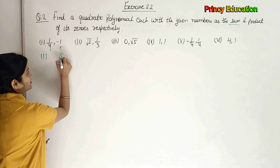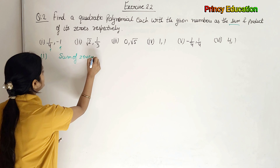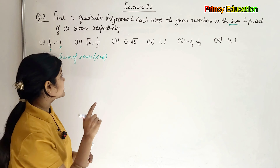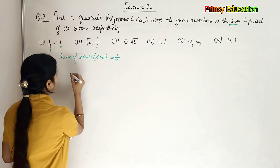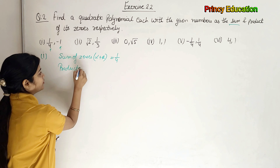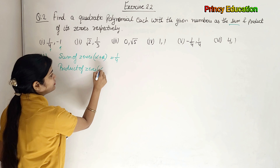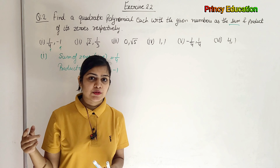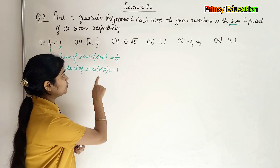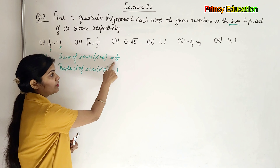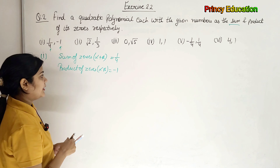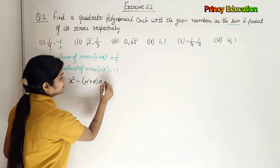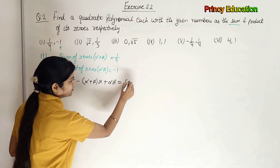First, what is given? Sum of zeroes — alpha plus beta — is equal to 1/4. Product of zeroes — alpha times beta — is equal to minus 1. Alpha and beta are the zeroes of the polynomial. So the sum of alpha and beta is 1/4 and the product is minus 1. Now for the quadratic equation, the formula is: x squared minus (sum of zeroes) times x plus (product of zeroes) equals zero.